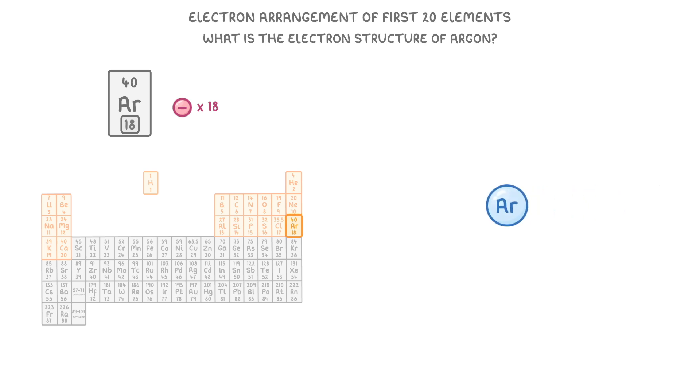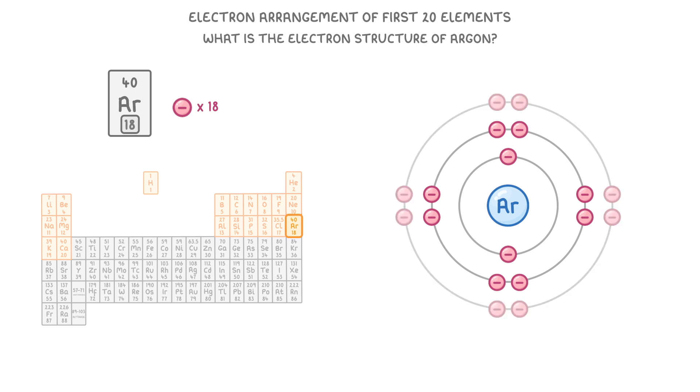Then after drawing a quick nucleus, we can start to draw the shells and electrons. The first shell will have 2 electrons. The second shell will have 8. And the third shell will also have 8. Because 2 plus 8 plus 8 gives us 18.